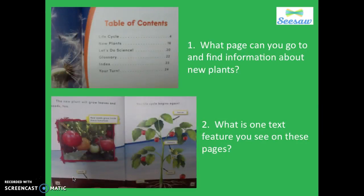All right, it's your turn, boys and girls. You're going to Seesaw these two questions to your teacher. For the first one, you're going to look at the table of contents. The first question says, what page can you go to and find information about new plants? Make sure you tell your teacher what page that is. And also the second question says, what is one text feature you see on these pages? So I want you to look at the pages of the tomato plant and tell your teacher what text features you see on those pages. Good job, boys and girls. Adios!